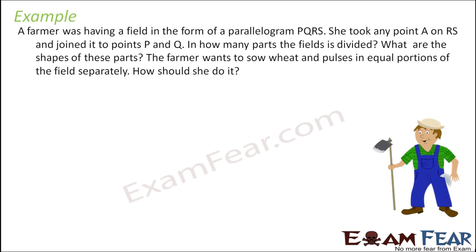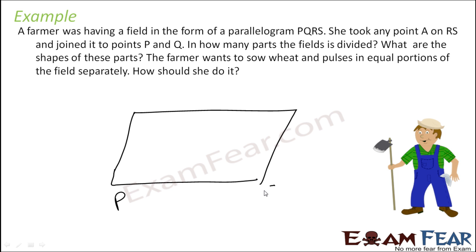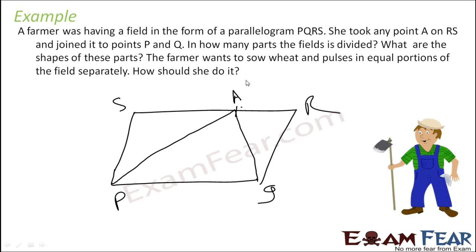Let's take a motion problem. A farmer was having a field in the shape of parallelogram PQRS. She took a point A on RS and joined P and Q to the point A. The field is divided into three parts, all triangles. The farmer wants to show that V and pulse have an equal portion. We know that area of triangle APQ is half of the whole parallelogram PQRS.